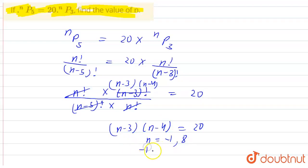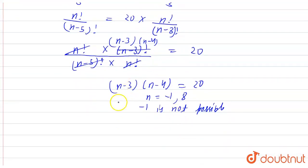Minus 1 is not possible because we are finding number of N. The value of N cannot be negative. That is why minus 1 is not possible. So the answer of this question is N is equal to 8.